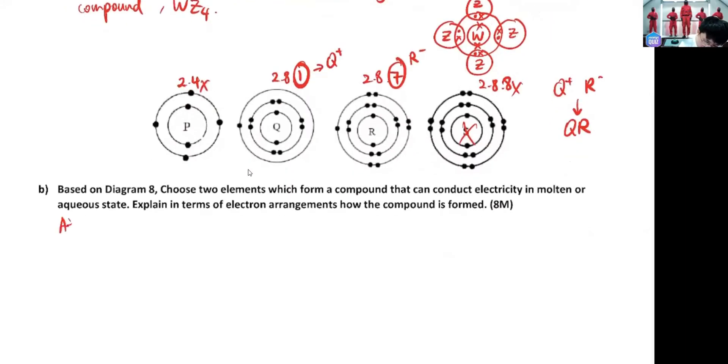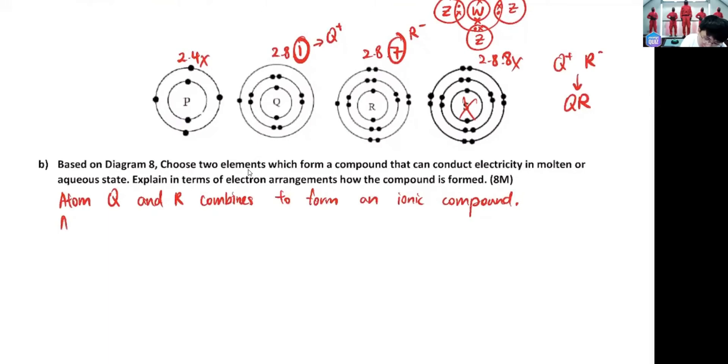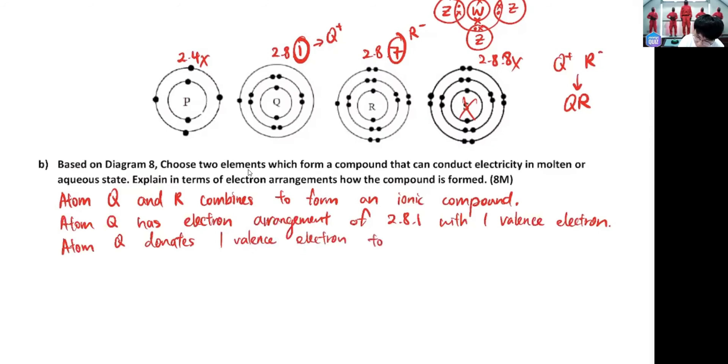So again, choose two elements. So our answer should be atom Q and R combines to form an ionic compound. How to start the eight mark size? Same format. Atom Q has electron arrangement of 2.8.1 with one valence electron. So what do he want to do with the one valence electron? He want to donate. So Q donates one valence electron to achieve stable octet electron arrangement.